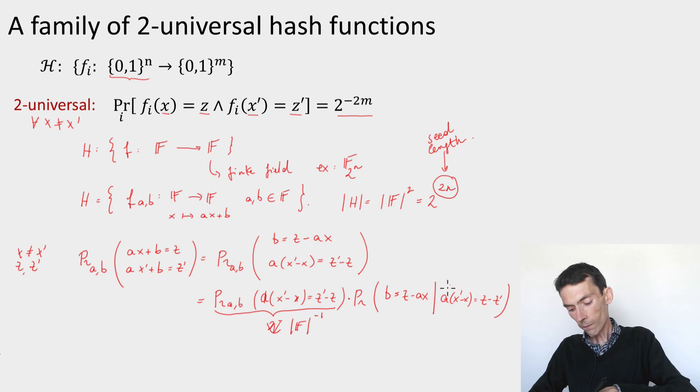The conditioning fixes the value of a. If a is fixed, x is fixed, z is fixed. I'm choosing b at random, then I will get a probability here that is 2 to the minus m if the finite field had size 2 to the m.